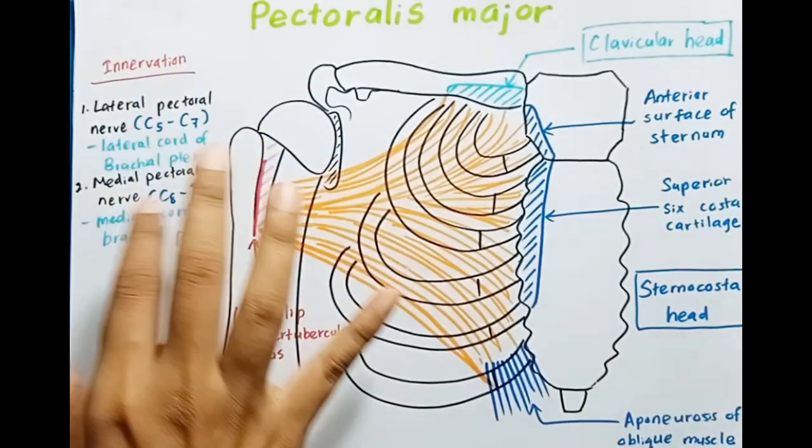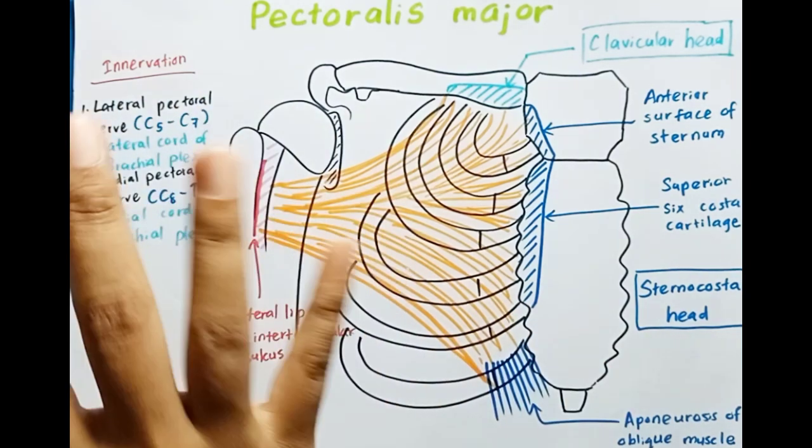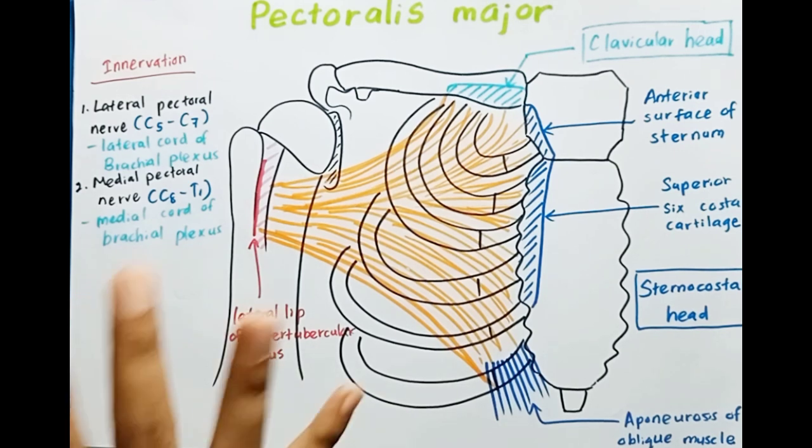This is a very important point: the pectoralis major muscle is innervated by all five nerve roots. That is very important.